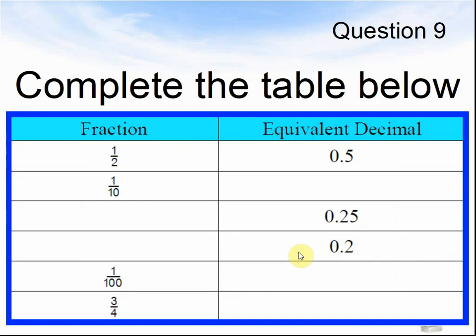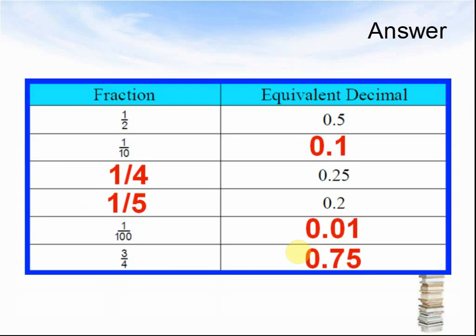Question 9. Complete the table below: Fraction and equivalent decimal. The answers were: a half equals 0.5, one-tenth equals 0.1, one-quarter equals 0.25, one-fifth equals 0.2, one-hundredth equals 0.01, three-quarters equals 0.75.